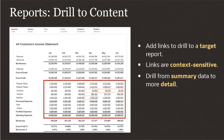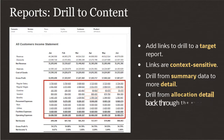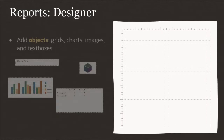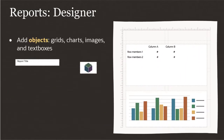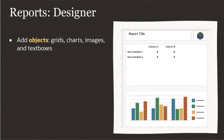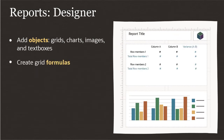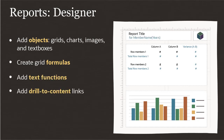For Enterprise Profitability and Cost Management, where you have a lot of allocation detail, you can set up chains of linked reports where users can drill back through the allocated data to its ultimate source. The Designer interface lets you add grids, charts, images, and text boxes to your layout, create formulas to calculate grid values, add text functions to dynamically retrieve metadata, add drill to content links, and add custom formatting.